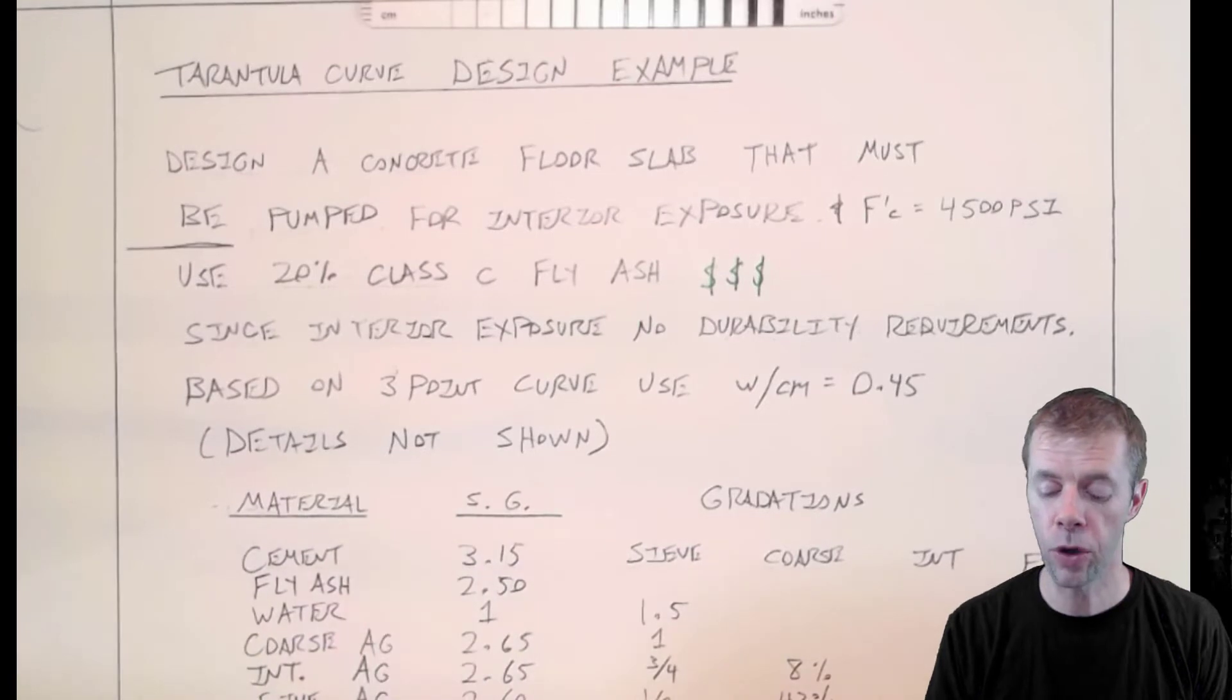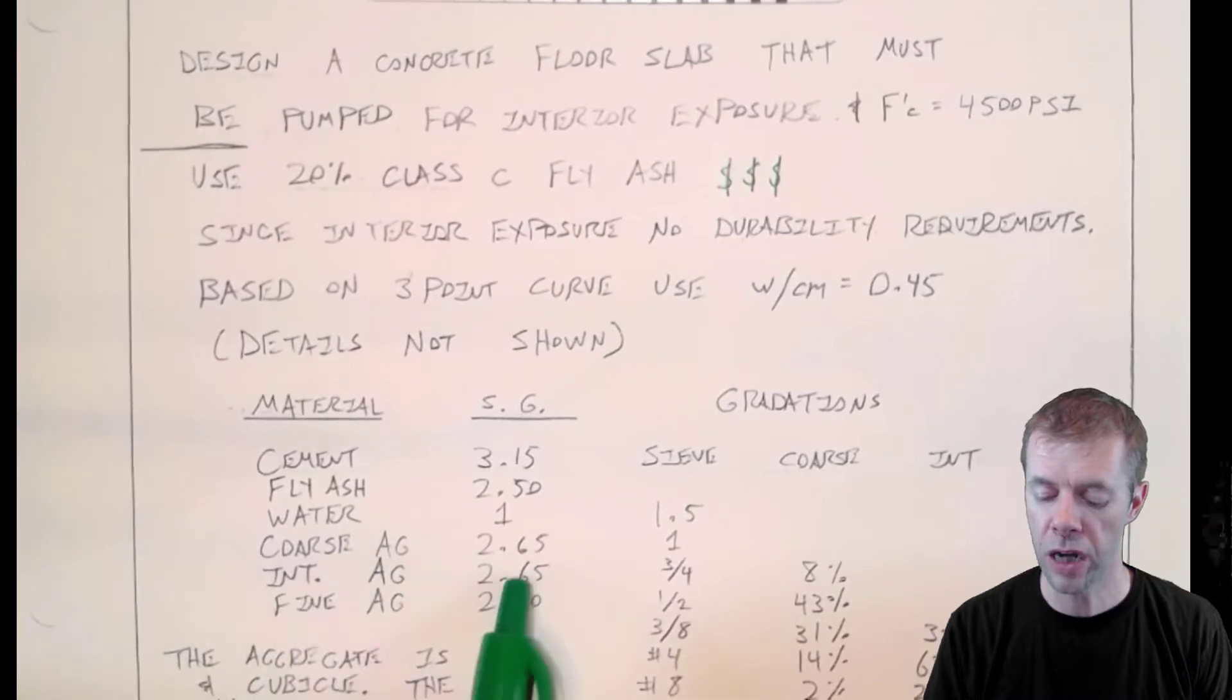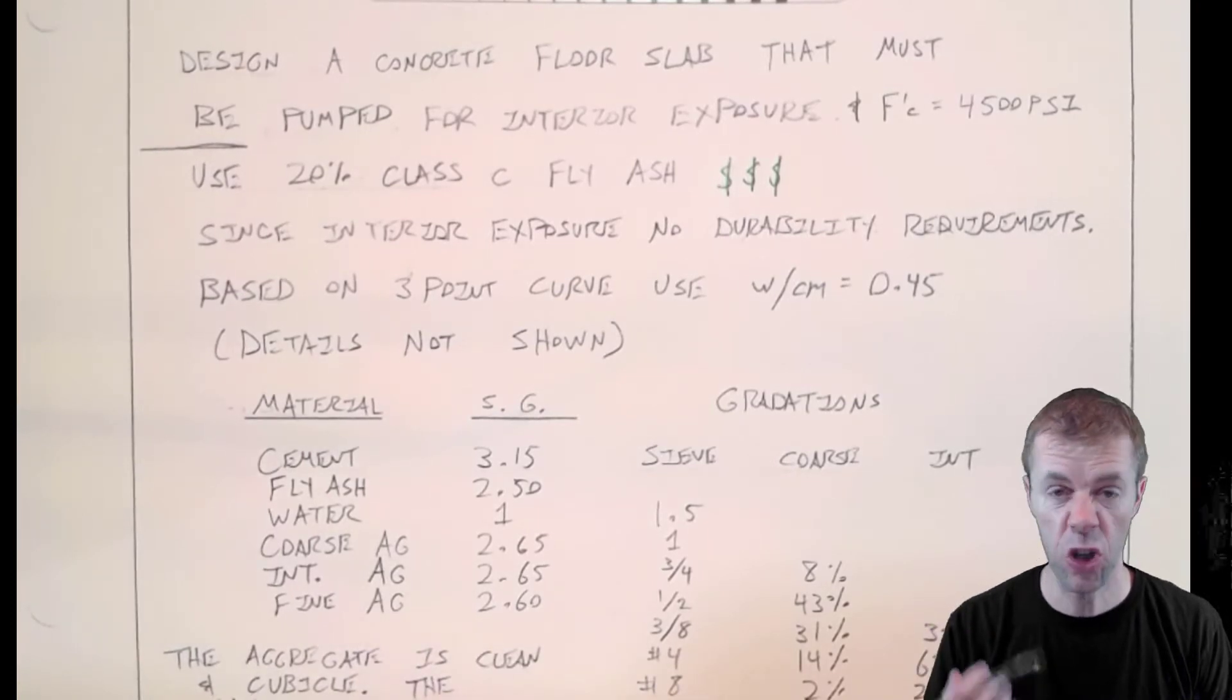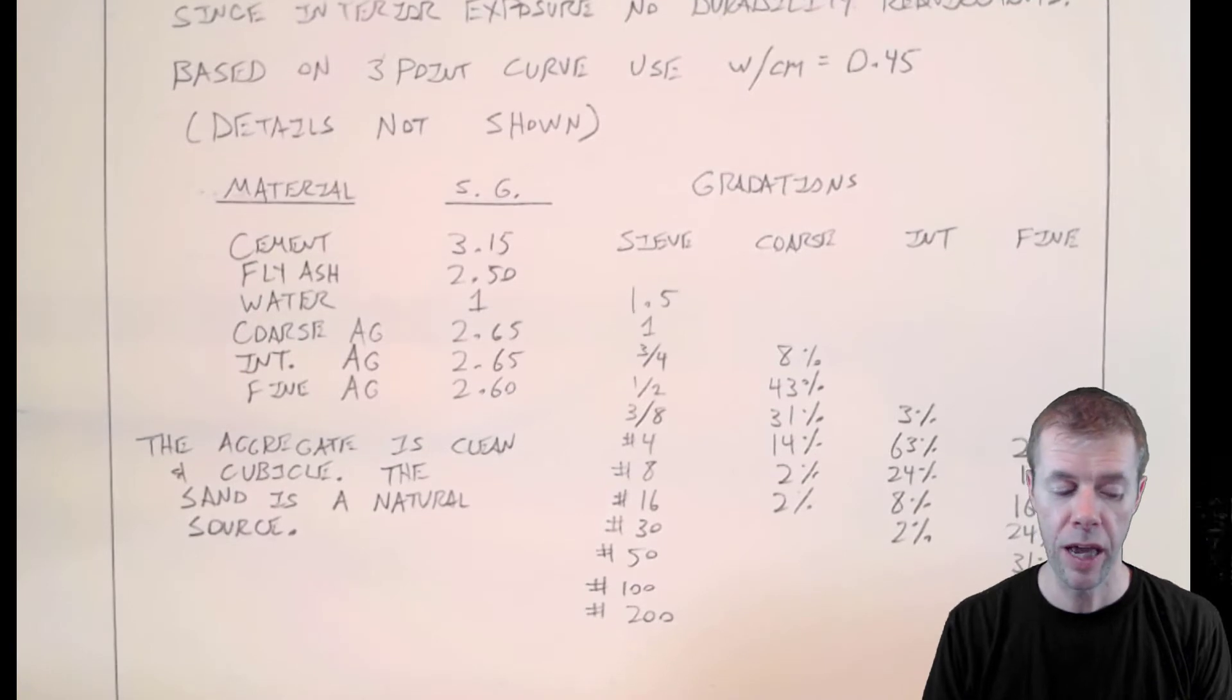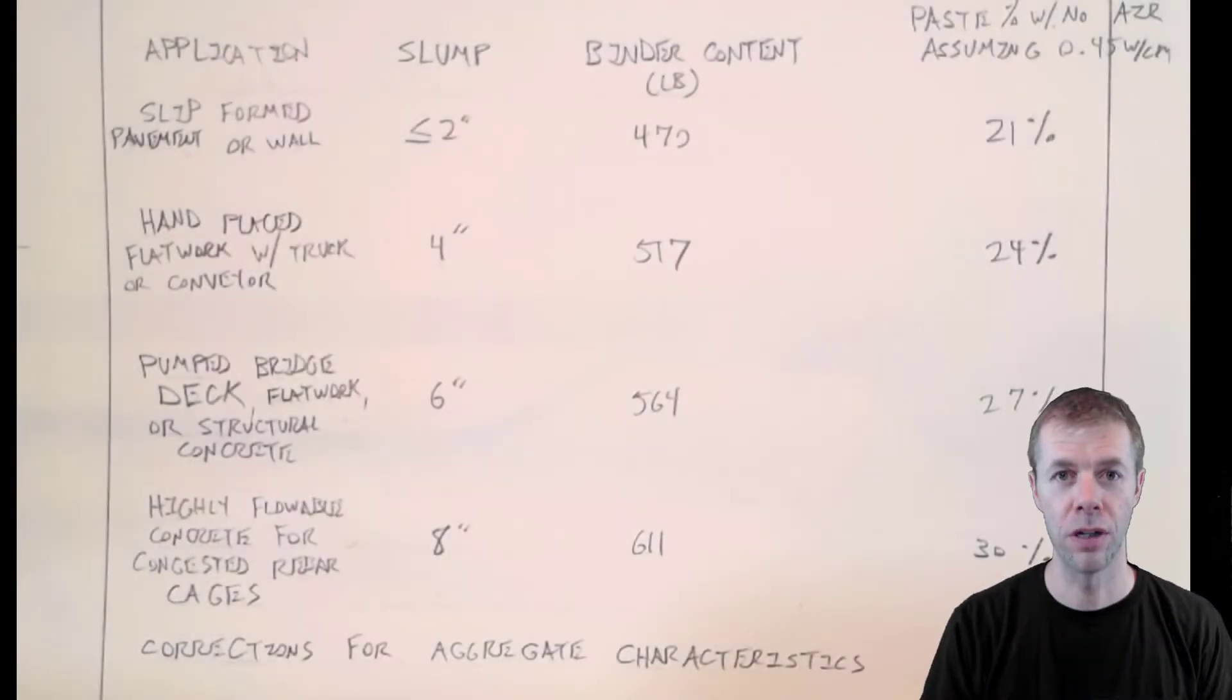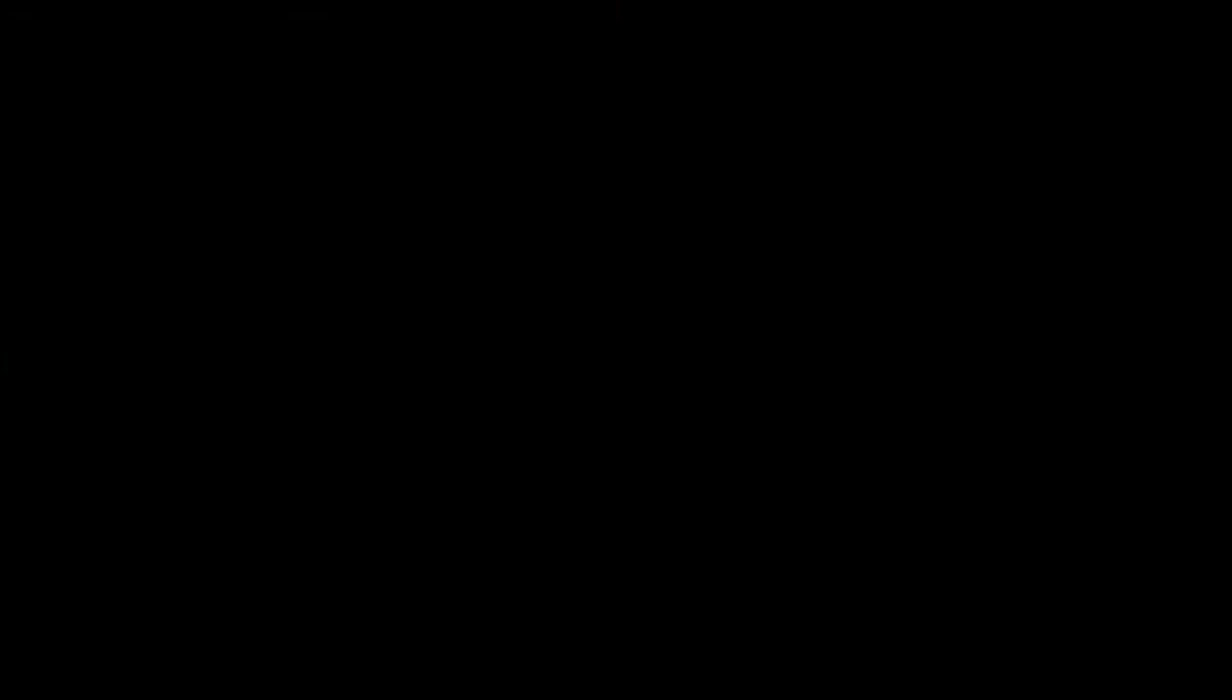I'm not going to show the details. We talked about three point curves in previous videos. Here are all the different materials and their specific gravities. We're using cement, fly ash, water, coarse aggregate, intermediate aggregate, fine aggregate. The aggregate is clean. That's good. It's cubicle in shape. That's good. And the sand is a natural source. Also good. Now here are the gradations given over here. These are all the percent retained gradations.